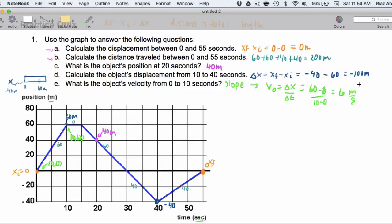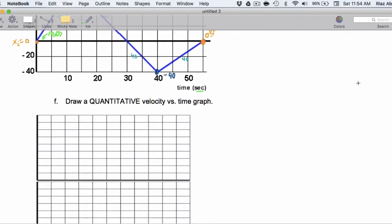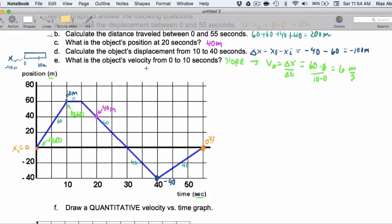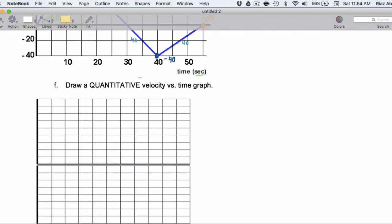So, that's question 1. Now, for question 2, it says draw a quantitative velocity versus time graph. So, what does that mean?